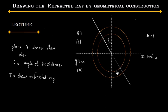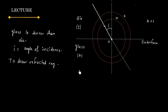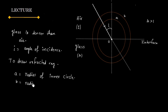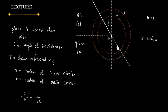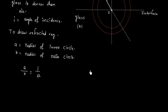To begin, let us draw two concentric circles with center at O. These two concentric circles have radii A and B, where A is the radius of the inner circle and B is the radius of the outer circle. These radii are in the ratio of the refractive index, that is A by B equals 1 by mu.